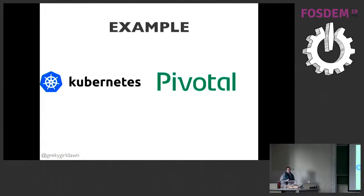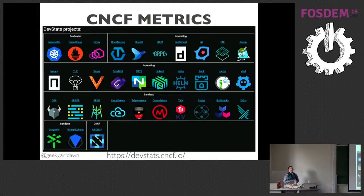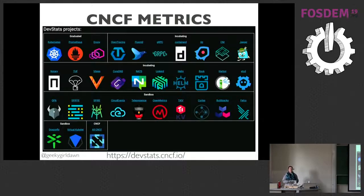I wanted to provide some example metrics showing how metrics fit into strategic efforts. At Pivotal, my current focus is putting together a strategy for our open source Kubernetes contributions, so I'll focus my examples on Pivotal and Kubernetes. Lucky for me, the CNCF has metrics for all of their projects including Kubernetes. They use DevStats to build their metrics dashboards, which was a great starting point for me to better understand the existing Kubernetes community.